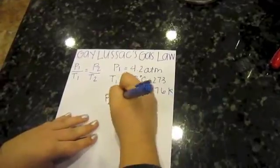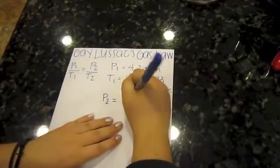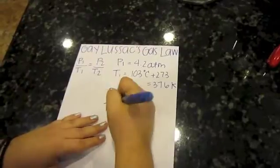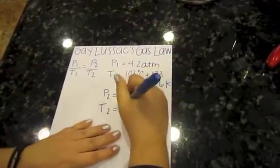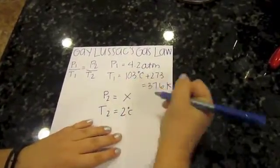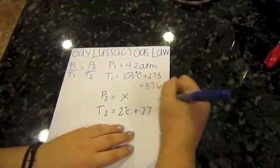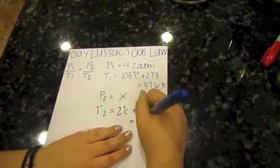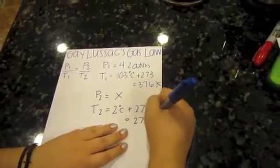P2 is what we're looking for, so we'll just leave it as X. T2 is equal to 2 degrees Celsius plus 273, which is equal to 275 Kelvin.